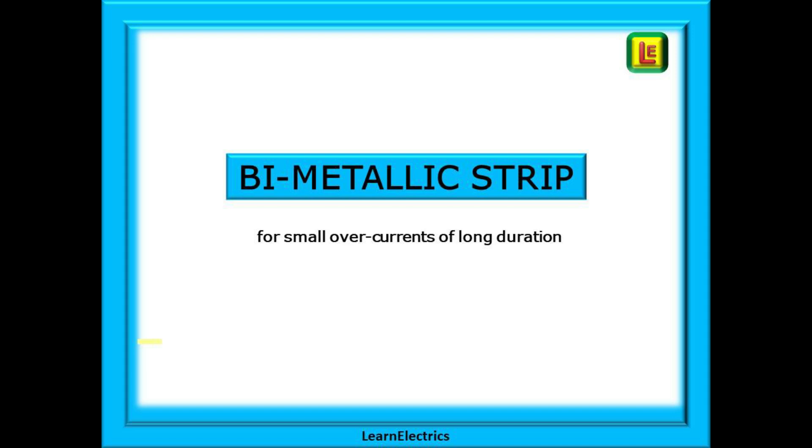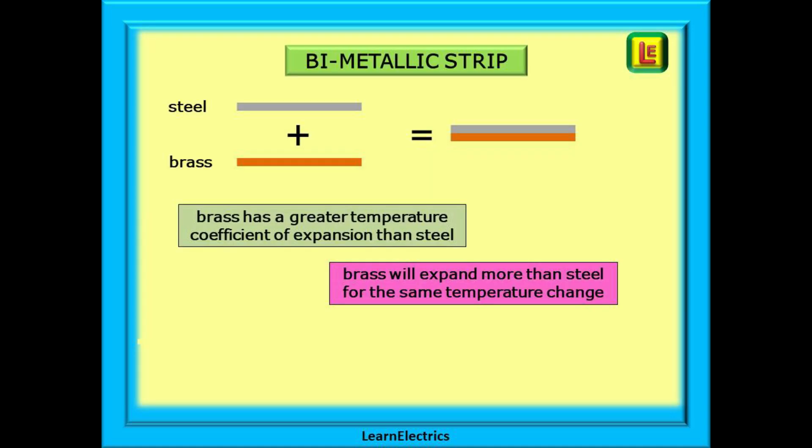Let's start by looking at the bimetallic strip that responds to small overcurrent of long duration. This strip or bar is quite simply two different metals that are physically bonded together. When they are manufactured, the touching surfaces are chemically locked together as one piece of metal.